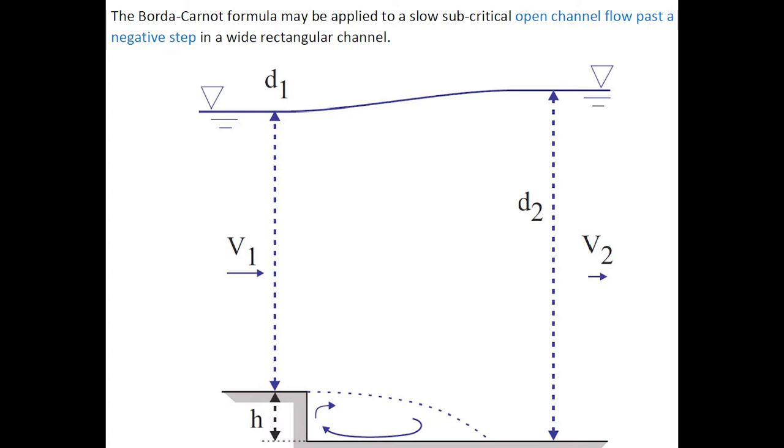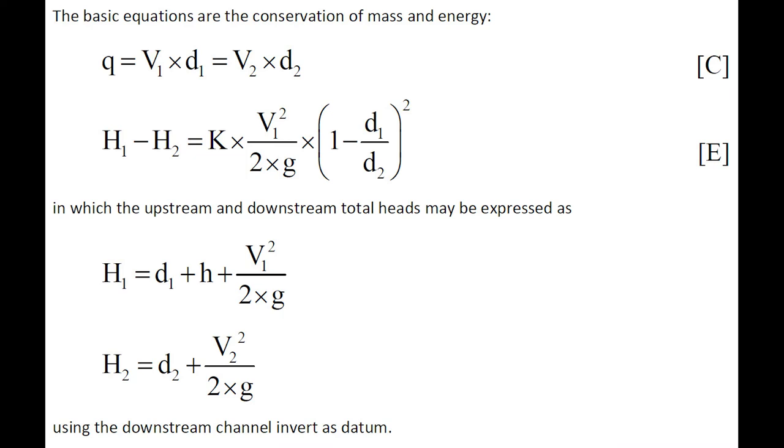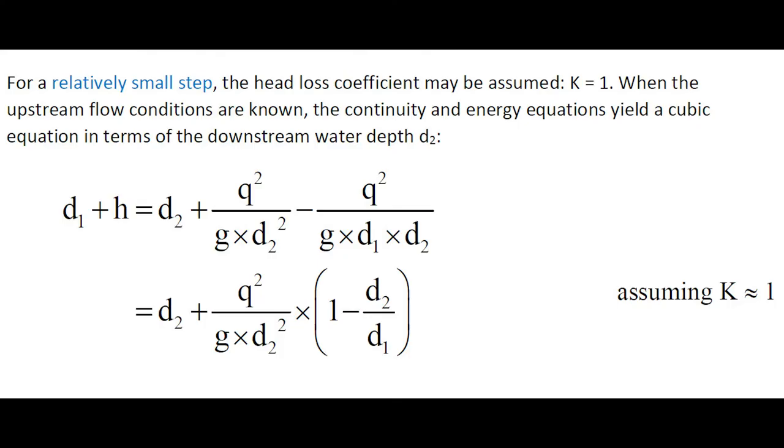The Borda-Carnot formula may be applied to a fluvial motion in an open channel past a negative step in a wide rectangular channel. The basic equations are the conservation of mass and of energy, in which the upstream and downstream total head may be expressed using the downstream channel invert as datum.